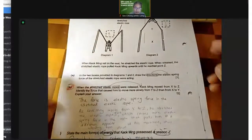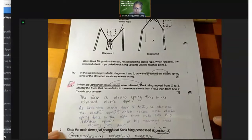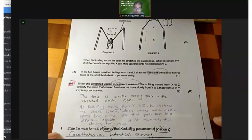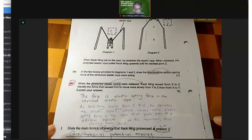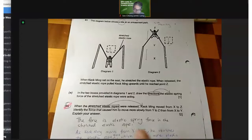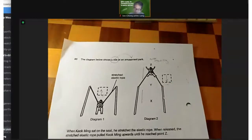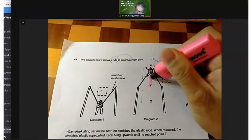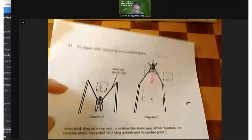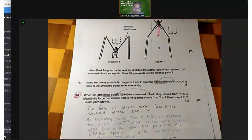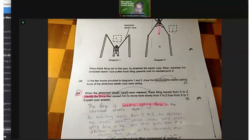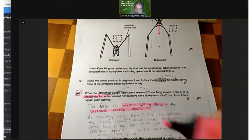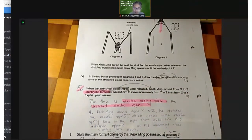The question asked is when the stretched elastic ropes were released, Kyokmin moved from X to Z. Identify the force that caused him to move more slowly from Y to Z than from X to Y. So two marks. First, I'm going to identify the force. The force is elastic spring force, where is it found? In the stretched elastic rope.